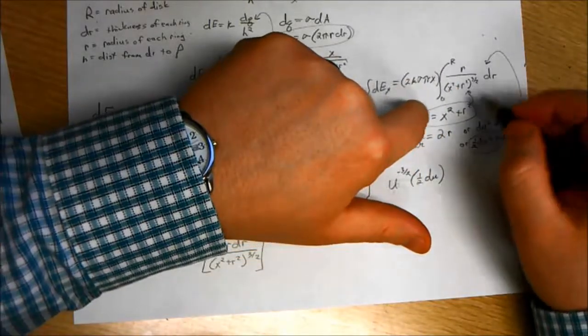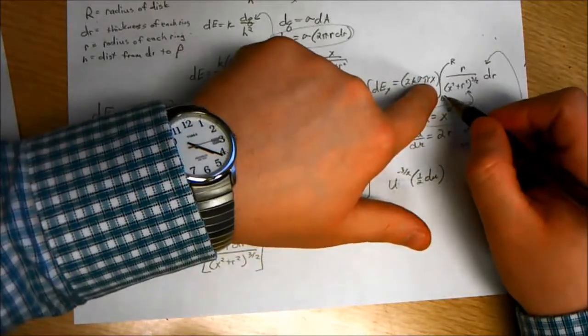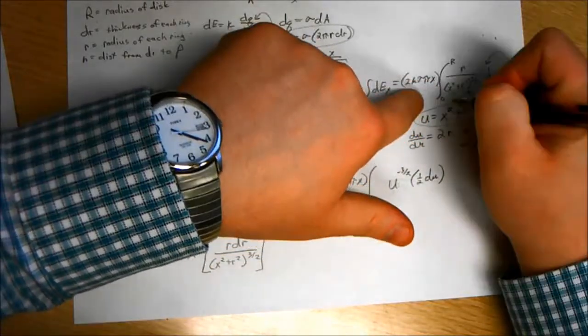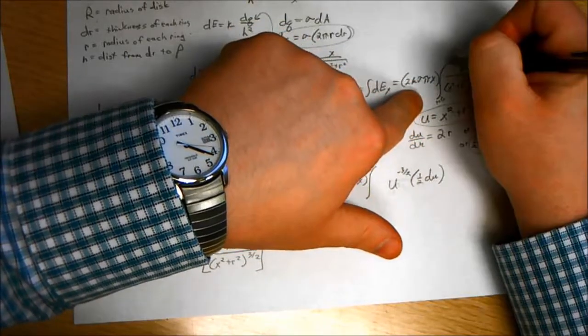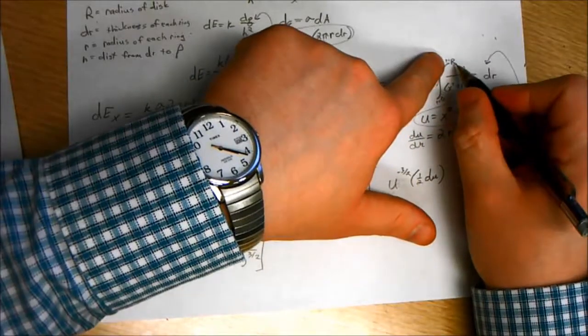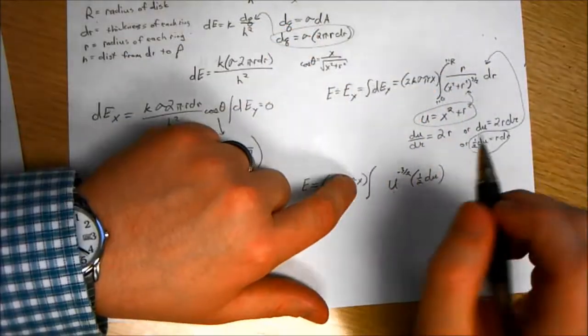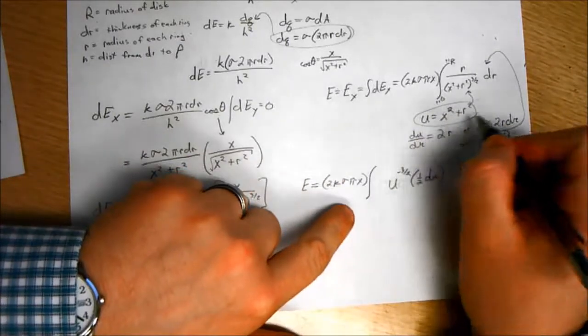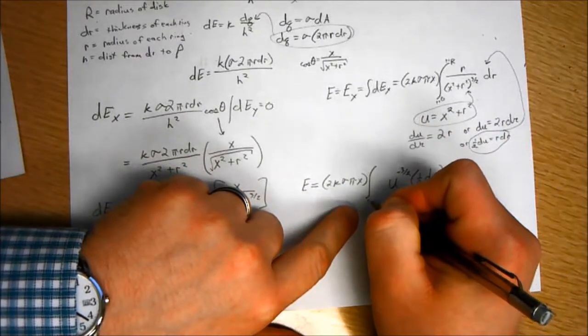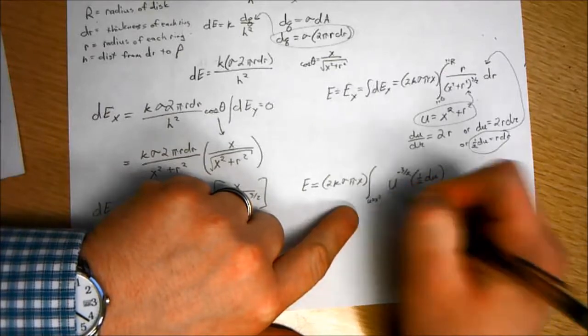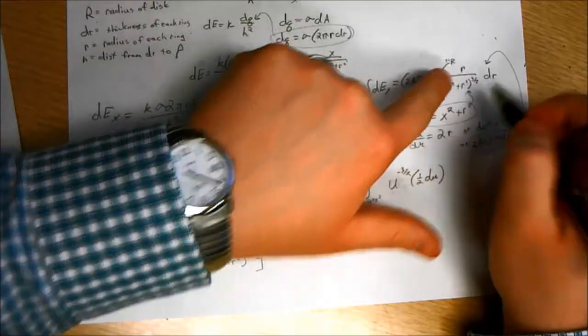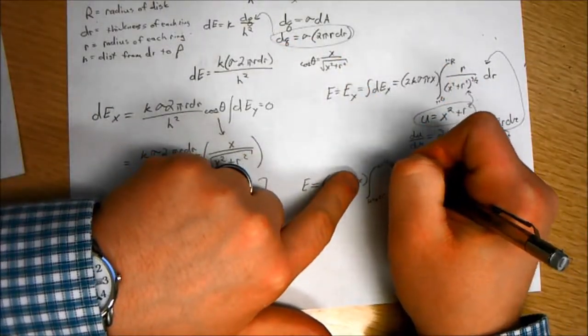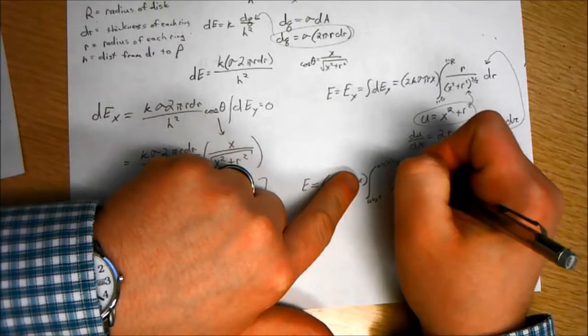Since I did this U substitution, I also have to do the same thing with the limits. Because here it's implied that R equals 0 to R equals capital R. Now, it's something different. So, when R equals 0, U equals X squared. And, when R equals capital R, U equals X squared plus R squared.